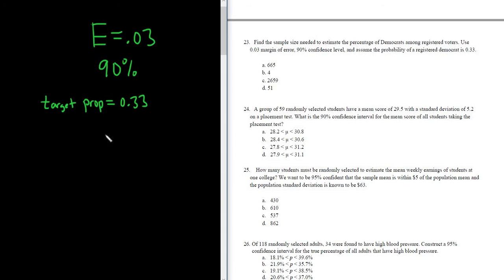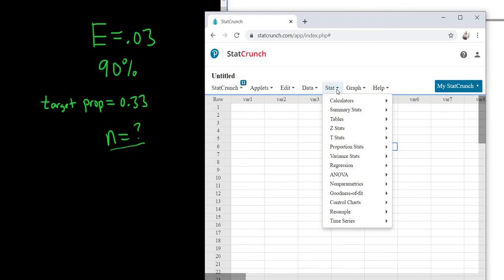So we're basically asked to find the sample size N. It says find the sample size, and it's the sample size needed to estimate a percentage. So what we do is we go to StatCrunch, and we go to stat, proportion stats, one sample,